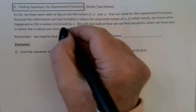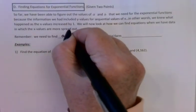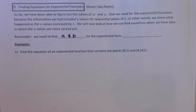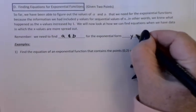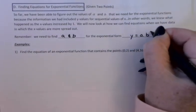Keep in mind the goal, we still need to find a and b, because ultimately we're looking for the exponential form, y equals a, b to the x.